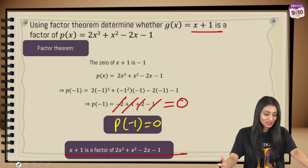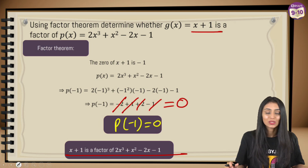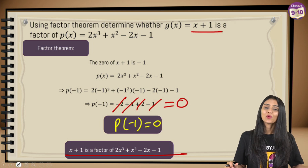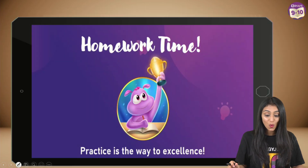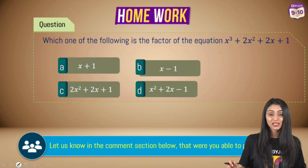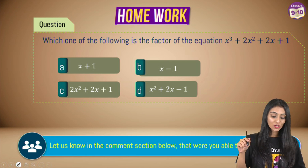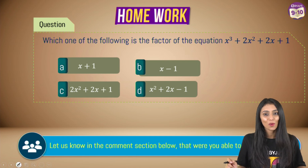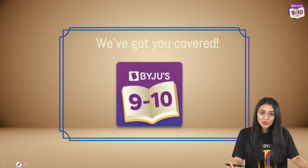Since p(−1) = 0, we can say that x + 1 is a factor of 2x³ + 2x² − 2x − 1. I hope everything discussed in this session is crystal clear. If you have any doubts, share them in the comment section below. Here's a homework question: which of the following is a factor of x³ + 2x² + 2x + 1? Share your answers in the comments!